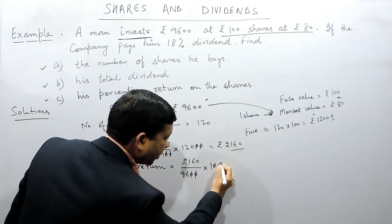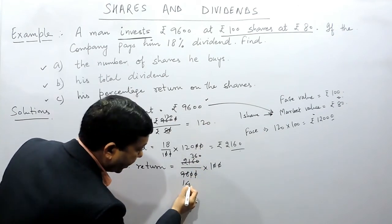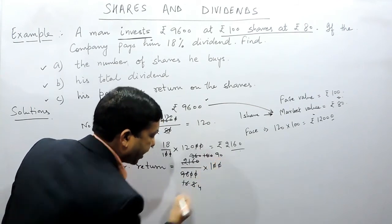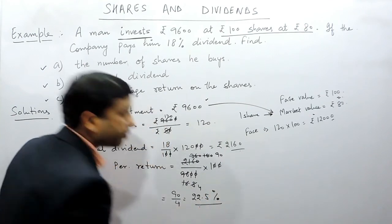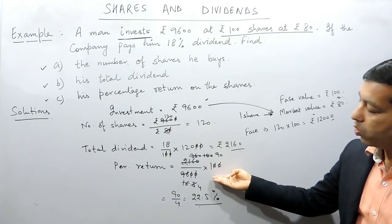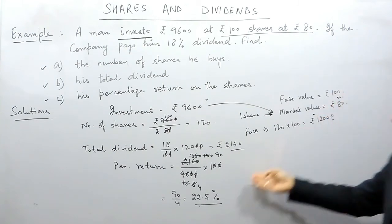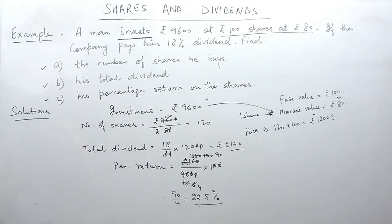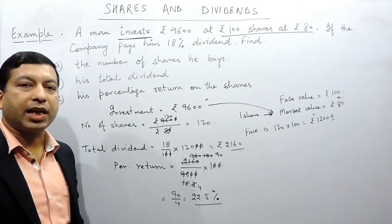Simplifying: cancelling the zeros, then dividing by 6 gives 360, dividing by 2 gives 180, dividing by 2 again gives 90. So it is 90 upon 4, which is 22.5%. One important insight: if the market value is less than the face value, the percentage return received by the shareholder is more than what the company provides; if the market value is more than the face value, the percentage return is less. The language is the most important aspect in shares and dividend.